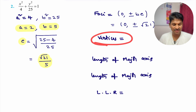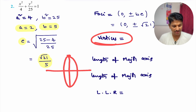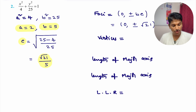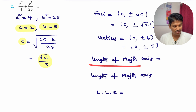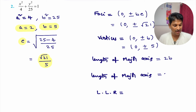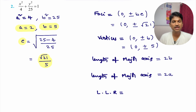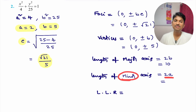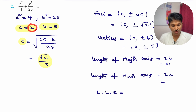Vertices are the ends of the major axis, which lie on the y-axis for 2nd type. Vertices formula: (0, ±b) = (0, ±5). Length of major axis for 2nd type = 2b = 2×5 = 10. Length of minor axis = 2a = 2×2 = 4.